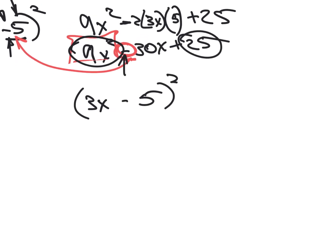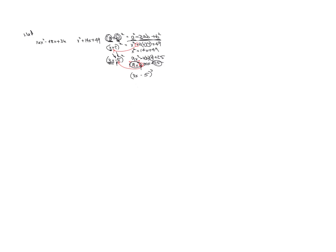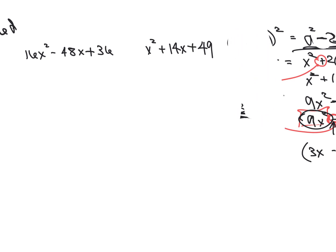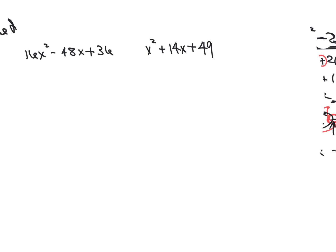Let's look at the next one. Perfect square trinomial — can I take the square root of 16x squared? Yes, it's 4x. Square root of 36 is 6. Can I multiply these two together and then multiply by 2 and get 48x? 4 times 6 is 24, times 2 is 48. So it's a perfect square trinomial. Therefore I can write this as parentheses squared. Square root of 16x squared is 4x, square root of 36 is 6, and I'm done.